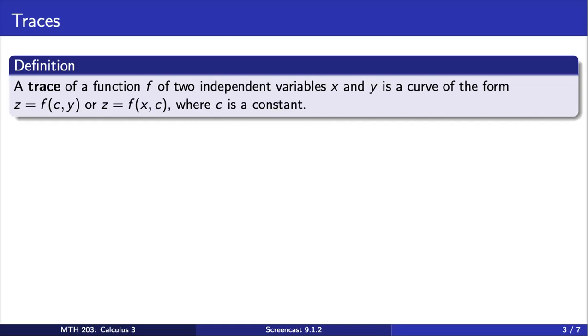A trace of a function f of two independent variables, x and y, is a curve that either fixes the x-coordinate to be some constant c and lets y vary, or it fixes the y-coordinate to be some constant c and lets x vary.